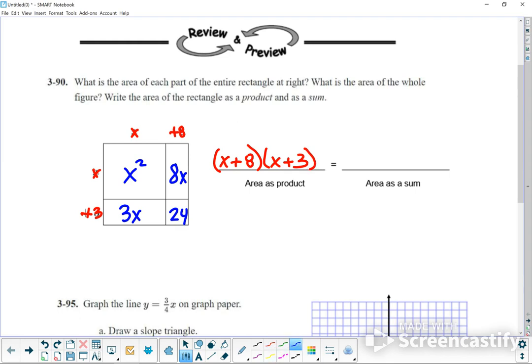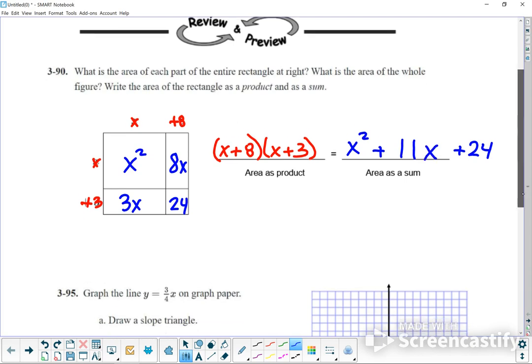The slightly harder part is writing it as a sum. The sum is the inside of the rectangle or the area model. That's going to be X squared plus, and since it's a sum, we're going to add all the pieces together. You might notice that a positive 8X and a positive 3X makes a positive 11X. So you can combine the positive 8X with a positive 3X and make a positive 11X. That's your area as a product and area as a sum.